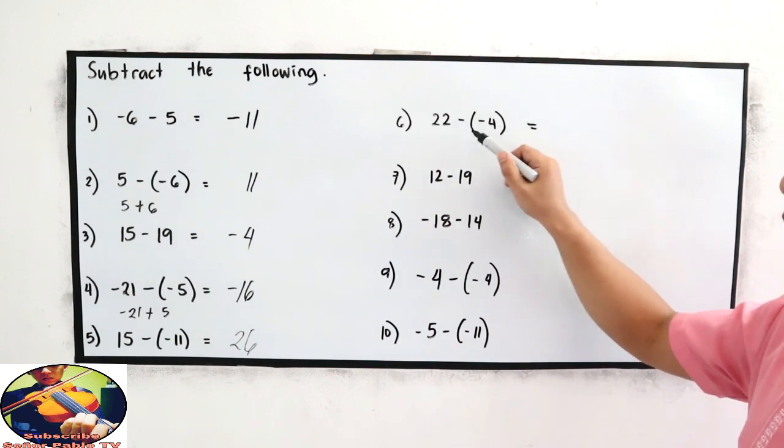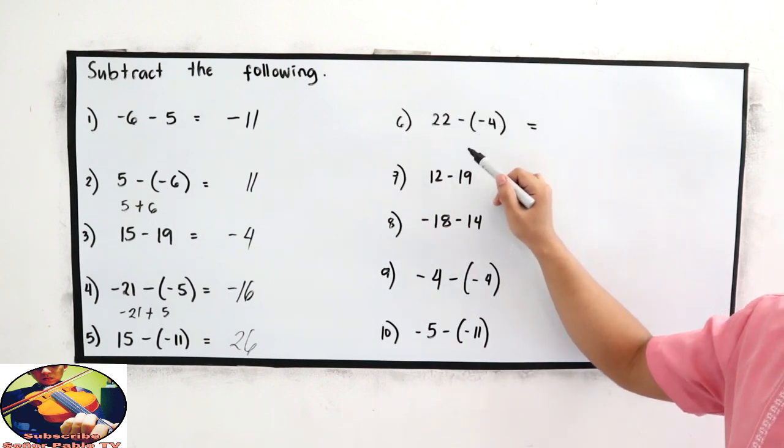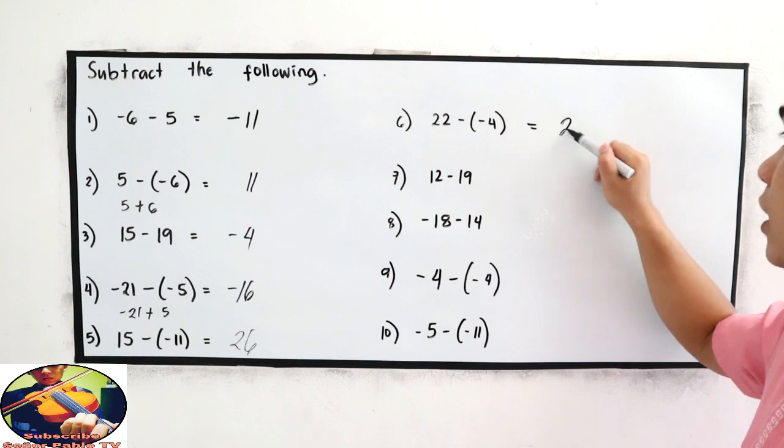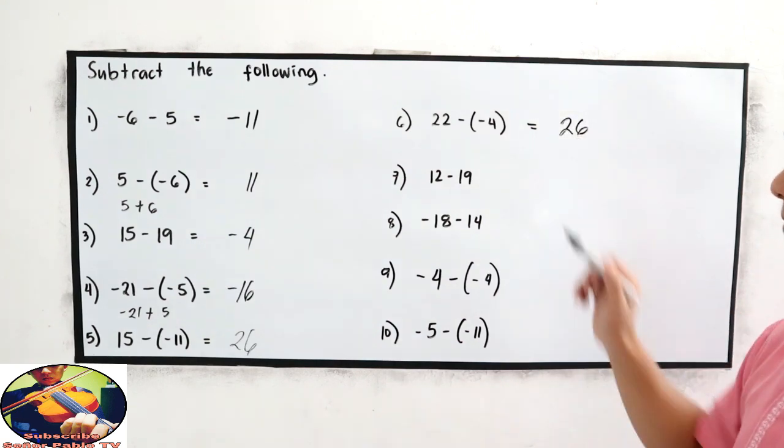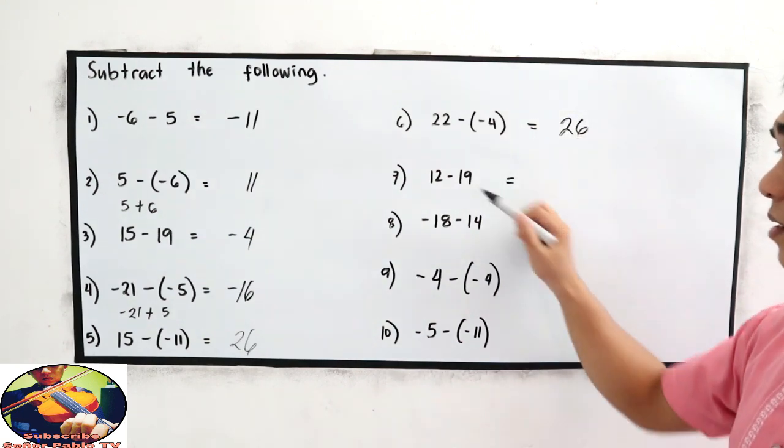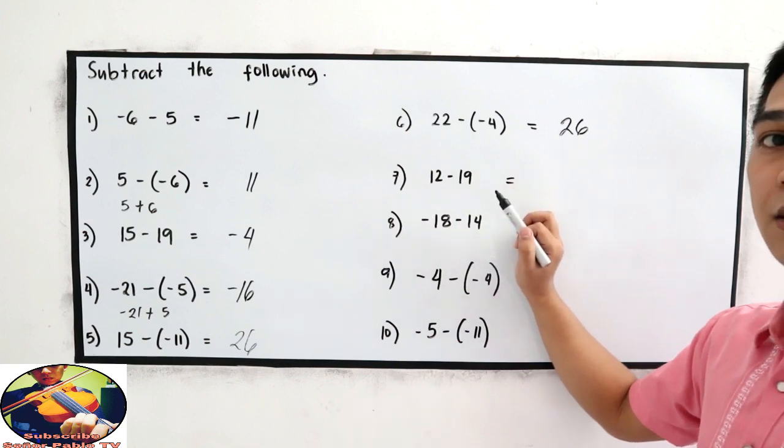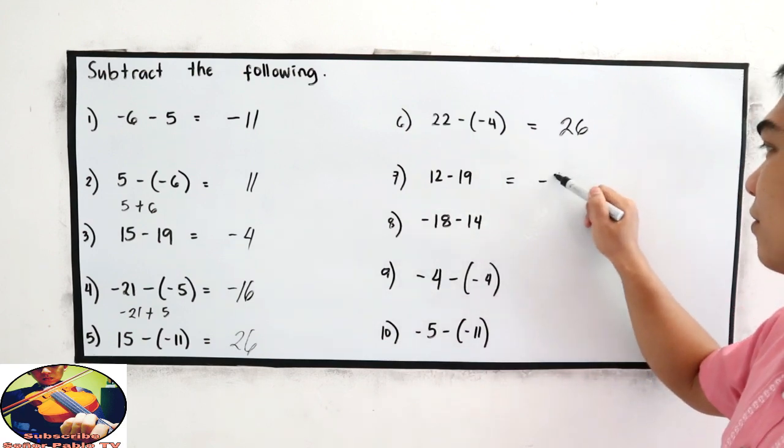Next, 22, negative times negative, so positive 4. So 22 plus 4 is 26. Next, 12 minus 19, negative 7.